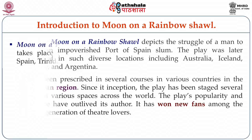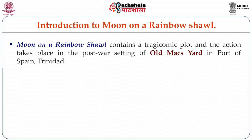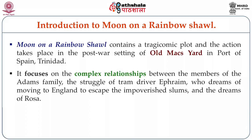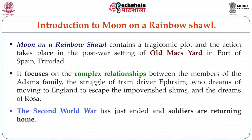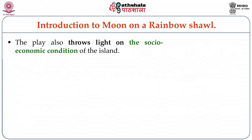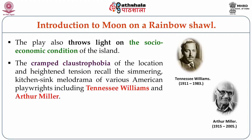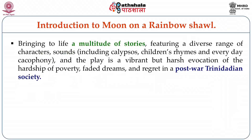Moon on a Rainbow Shawl contains a tragic-comic plot and the action takes place in the post-war setting of Old Mac's yard in Port of Spain, Trinidad. It focuses on the complex relationship between members of the Adams family, the struggle of tram driver Ephraim who dreams of moving to England to escape the impoverished slums, and the dreams of Rosa. The Second World War has just ended and soldiers are returning home. The play throws light on the socio-economic conditions of the island. The cramped claustrophobia of the location recalls the kitchen sink melodrama of American playwrights including Tennessee Williams and Arthur Miller, bringing to life a multitude of stories featuring diverse characters, sounds including calypso, children's rhymes and everyday cacophony. The play is a vibrant but harsh evocation of the hardship of poverty, faded dreams and regret in post-war Trinidadian society.